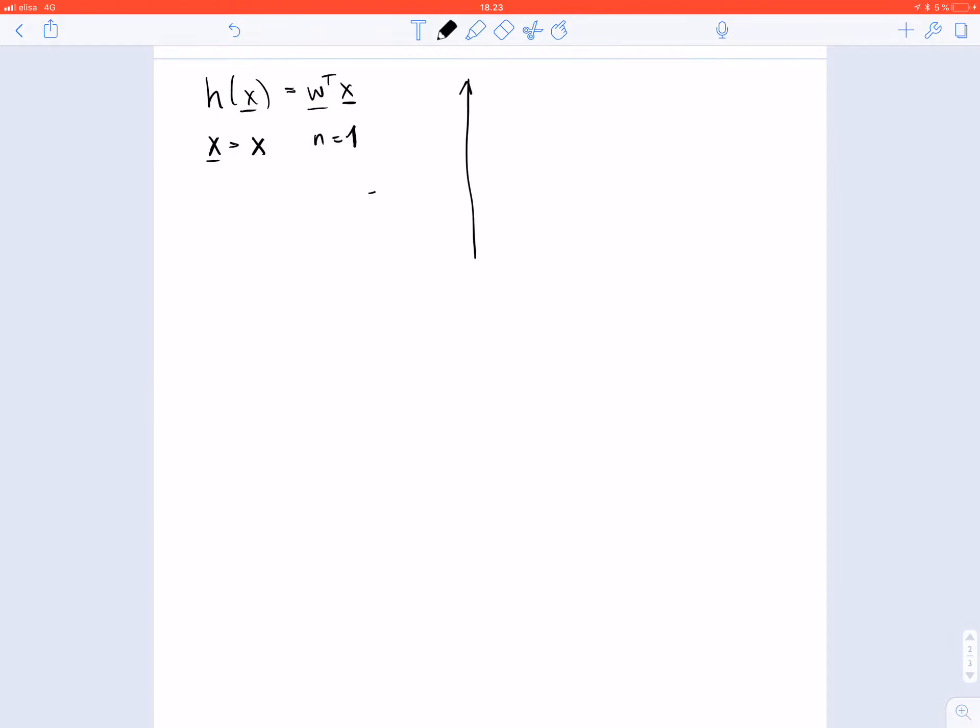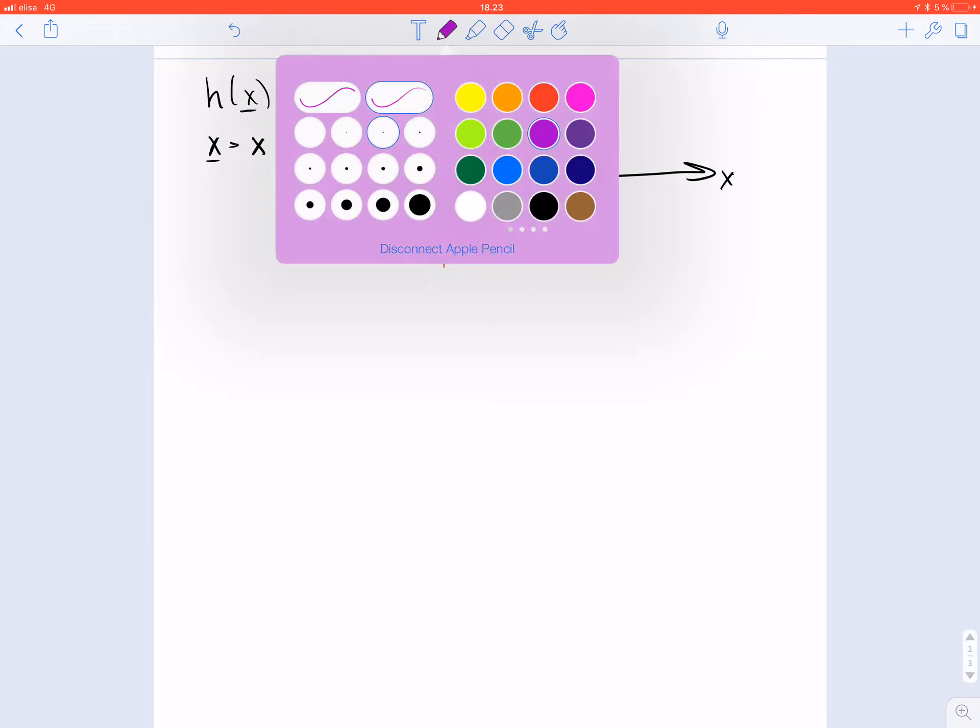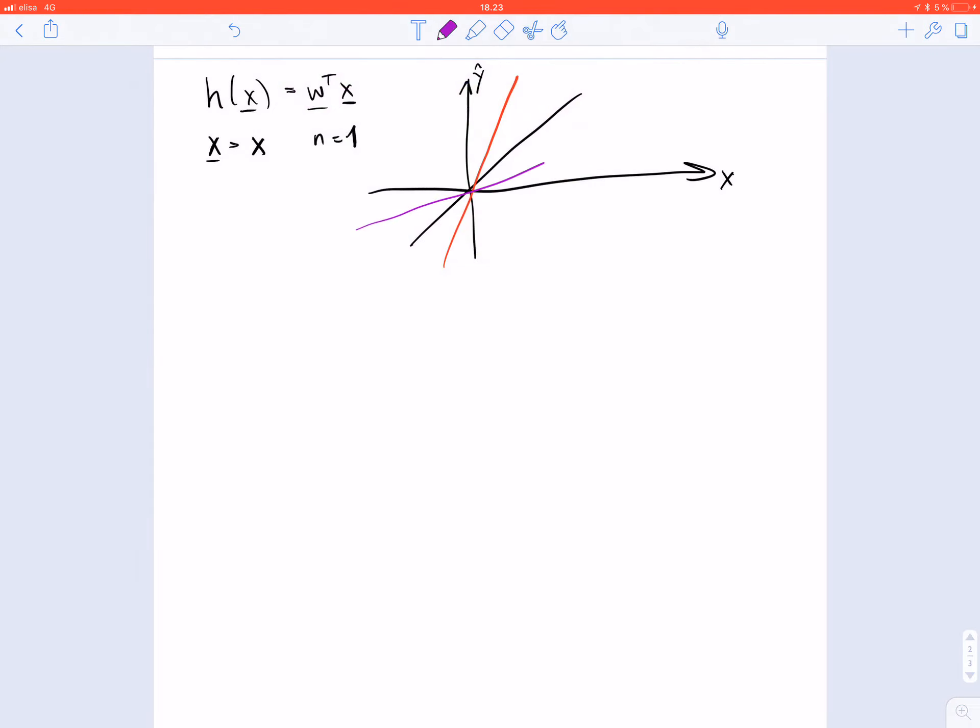With this linear hypothesis space we can only represent straight lines if we plot on the x-axis the feature value and on the y-axis the predicted label value. We can change the weight to get different straight lines, but beside a straight line we cannot do much.